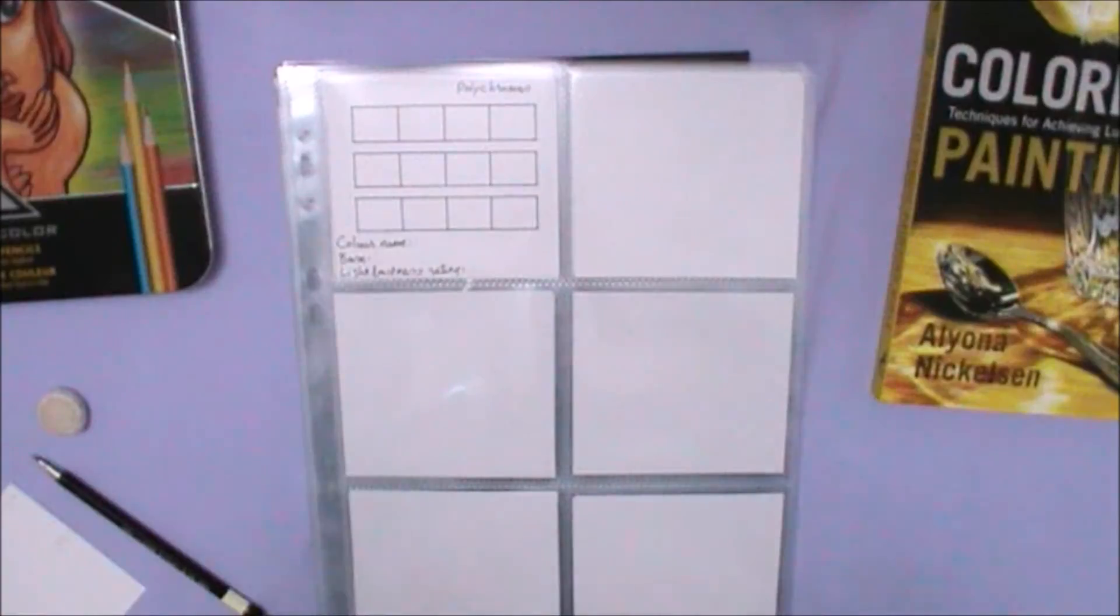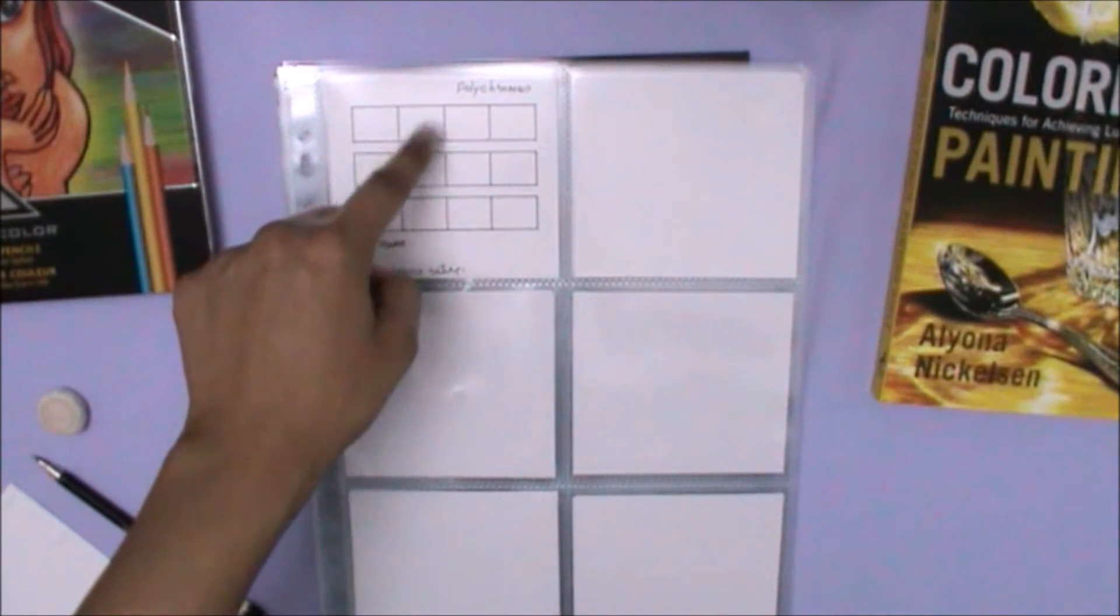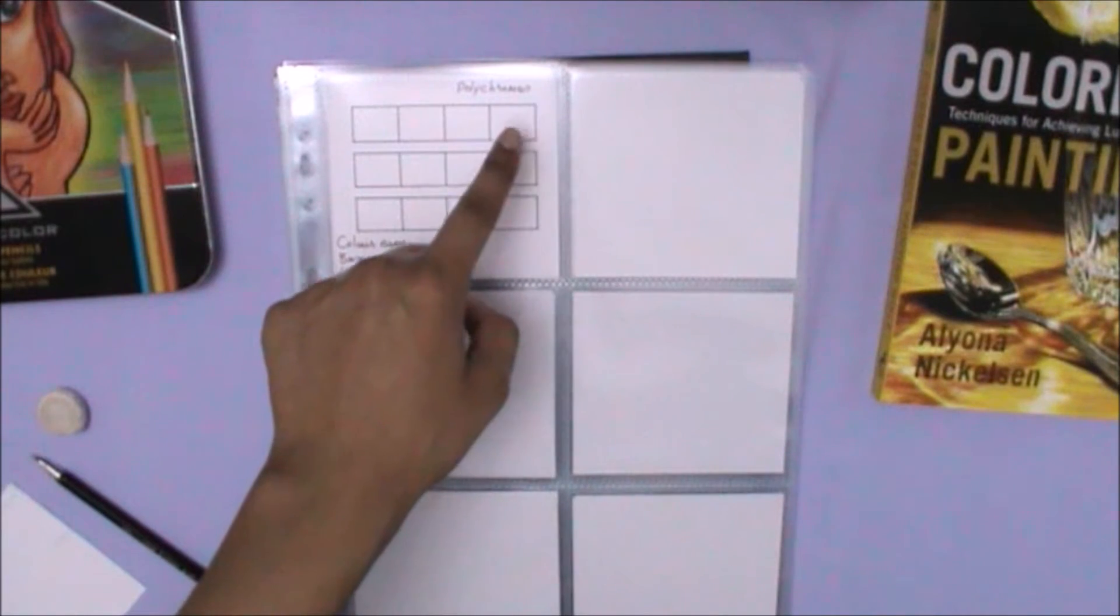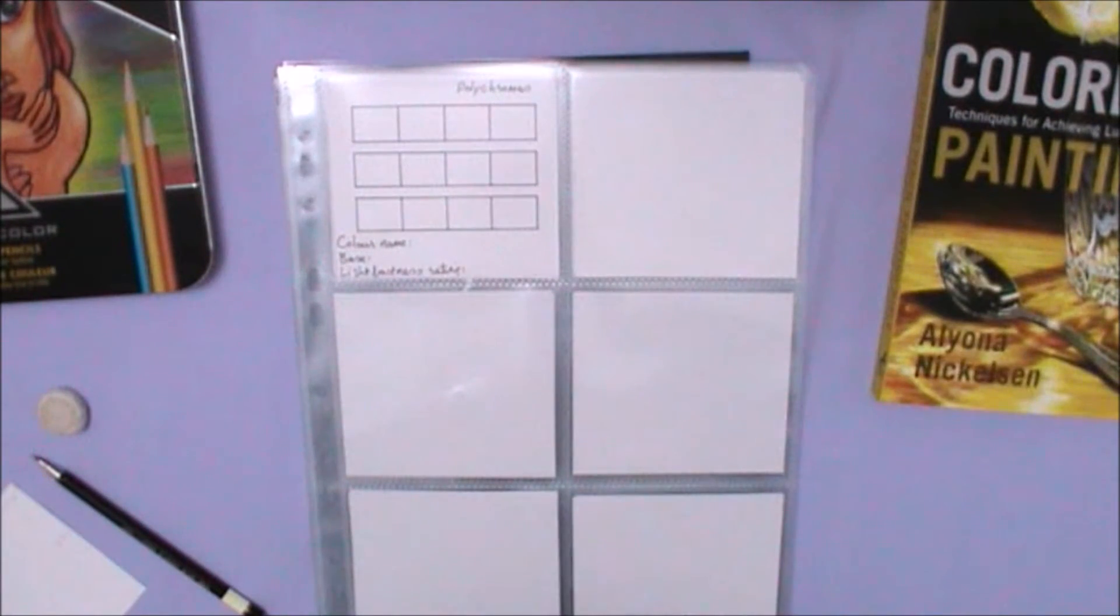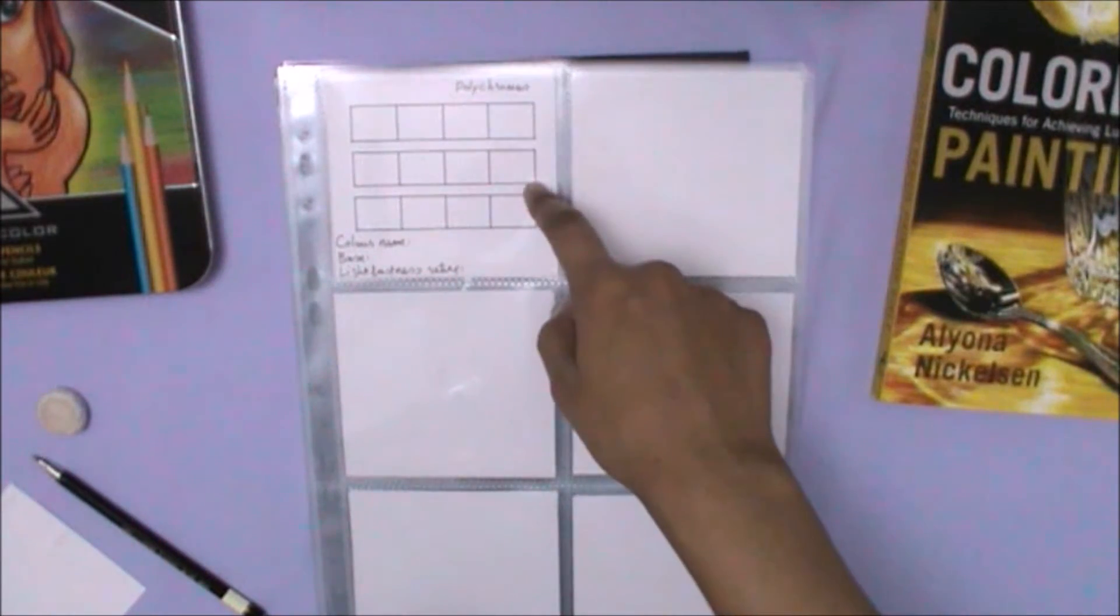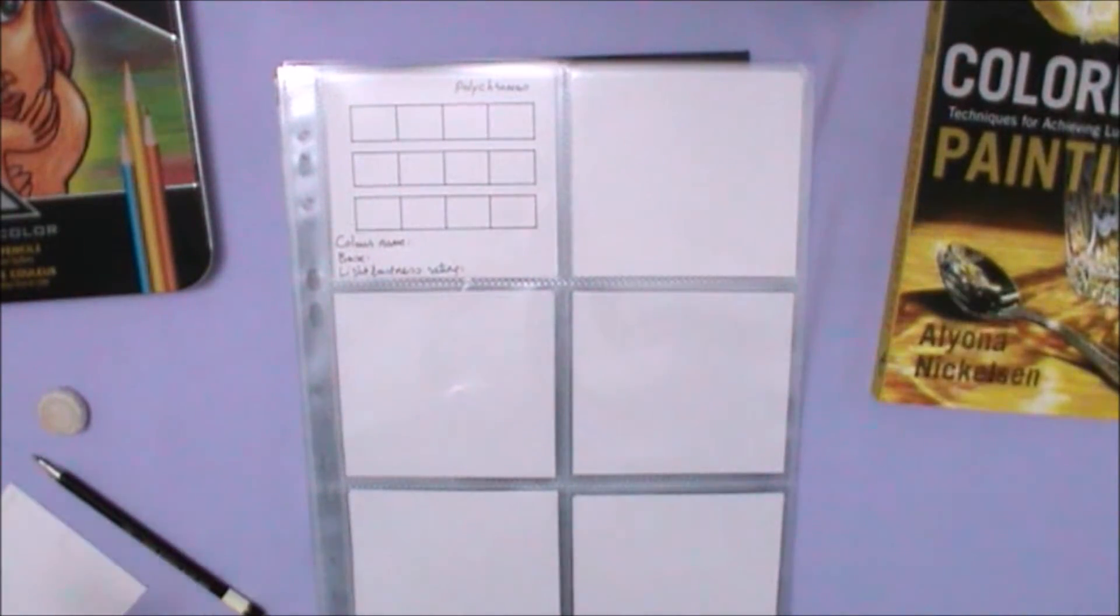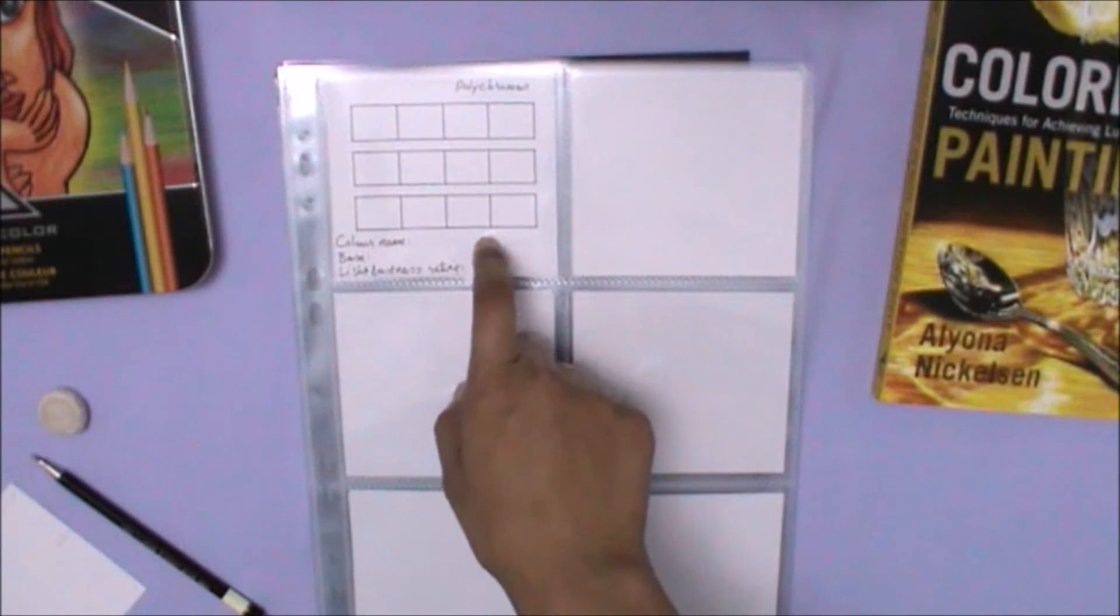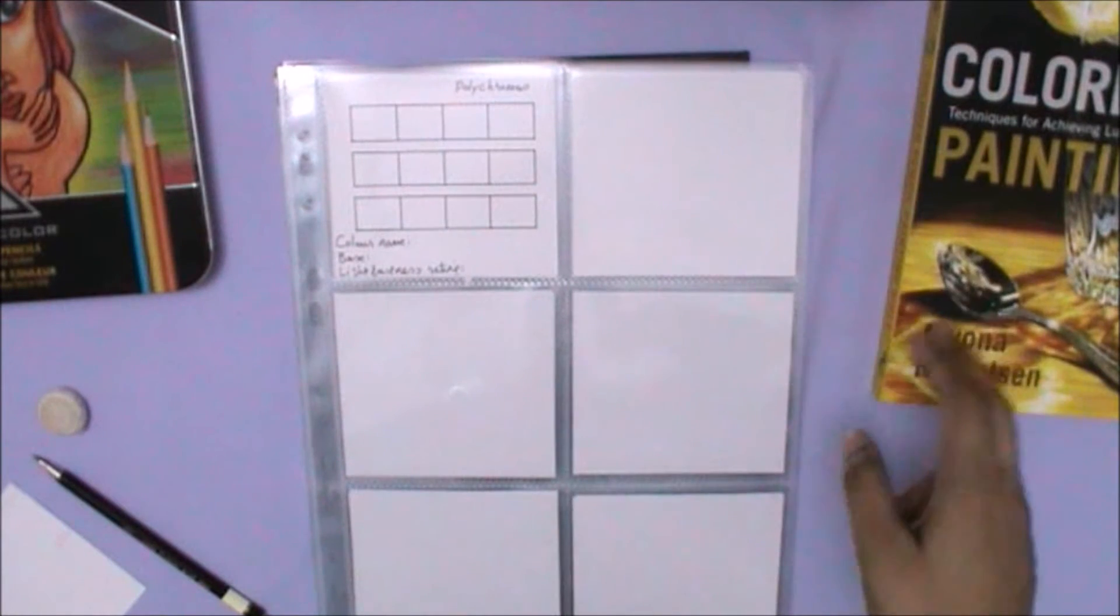I should mention that this idea of putting a light pressure box, a medium pressure box and a dark pressure box comes from other YouTubers as well as this book. But the idea of using a mineral spirit to blend out comes from this book alone. Blending out with a white pencil I've seen other YouTubers do that as well.